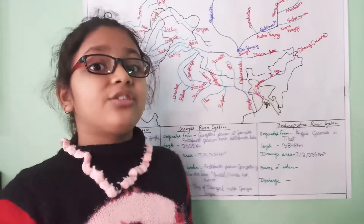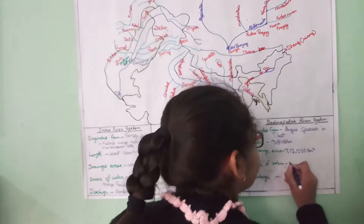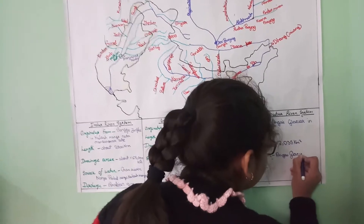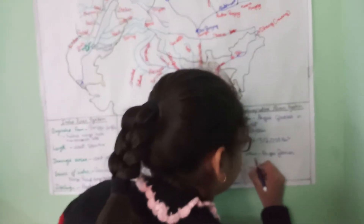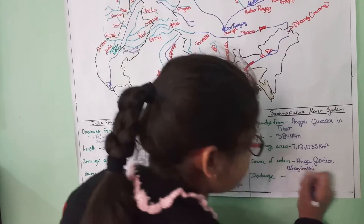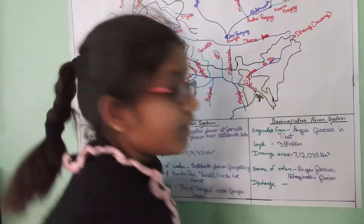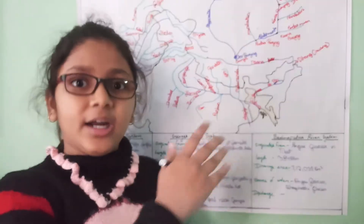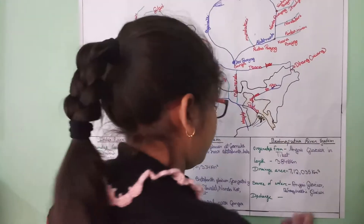The source of water of Brahmaputra is Angshi Glacier and Bhaagirathi Glacier. Brahmaputra then discharges into the Bay of Bengal along with the Padma river (Ganga), making a large delta.